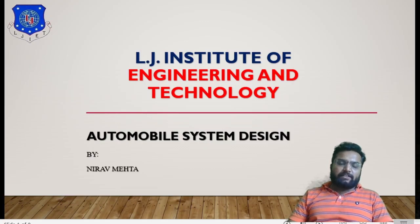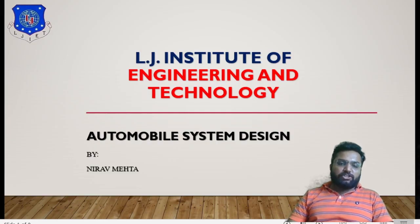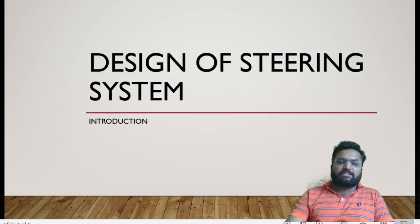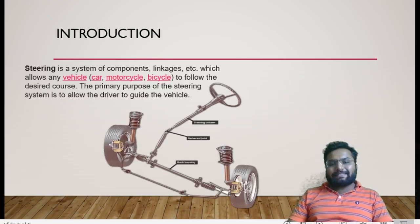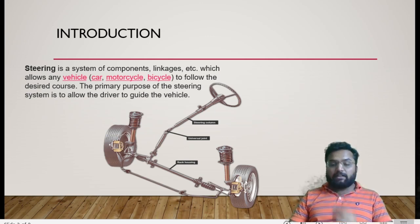So first of all, what is the Steering System? A steering system is nothing but a combination of linkages and mechanisms which help our vehicle to be in a desired path or desired position. Here you can see this is the basic type of a steering system in which you have a steering handle in your hand which is connected to the front wheels of the vehicle with the help of different linkages.